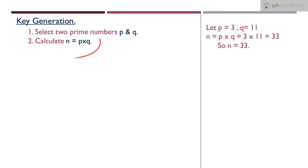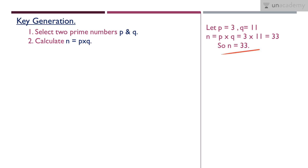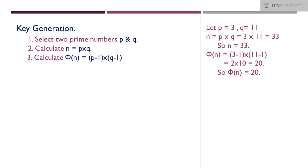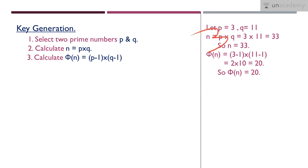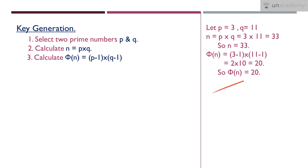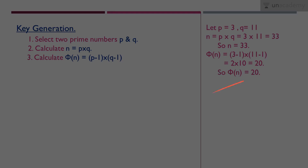The next step is to calculate n, where n equals P times Q. With P equal to 3 and Q equal to 11, we get n equal to 33. After that, we calculate φ(n), which equals (P − 1) times (Q − 1). So that's 2 times 10, which equals 20. Now we have values for P, Q, n, and φ(n).